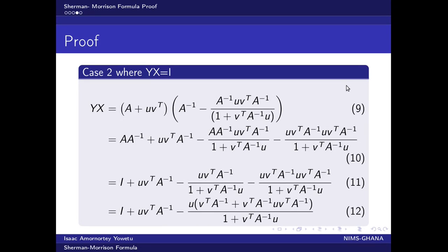We now move a step further to consider case two, where we have y multiplying x to give us an identity. This expression is our y and this is our x. When we multiply through it gives rise to equation 10. In equation 10 we observe that this gives us an identity matrix, and this also gives us an identity, so these terms vanish.